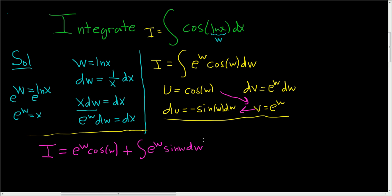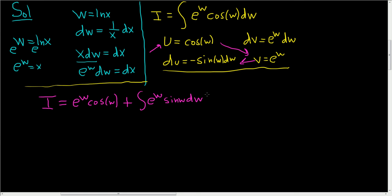Alright, now we have to use parts again. And since we picked the trig function as our u the first time we use parts, we have to pick the trig function again. So it's really, really important. If you pick the exponential, continue to pick the exponential to be your u. If you pick the trig function, continue to pick the trig function to be your u. If you don't, it goes on in a psychotic loop and you'll get stuck.